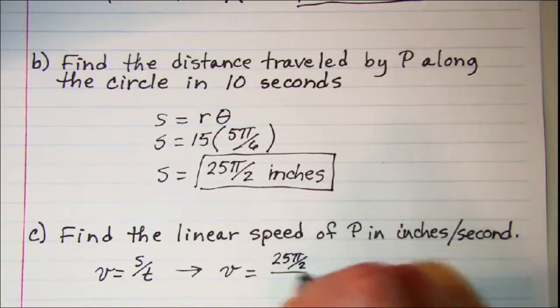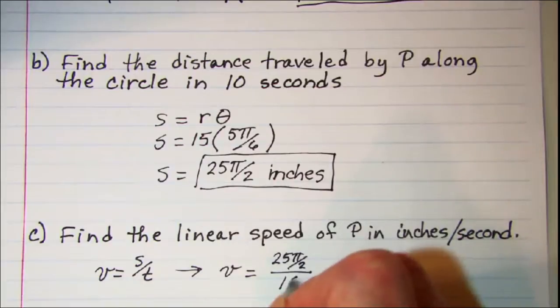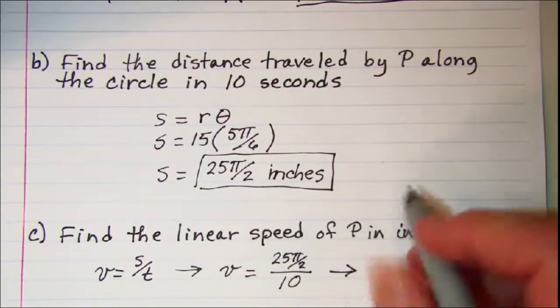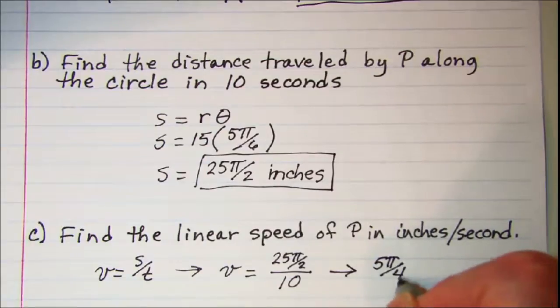2 divided by the time which was 10 seconds. And this simplifies to 5π over 4 inches per second.